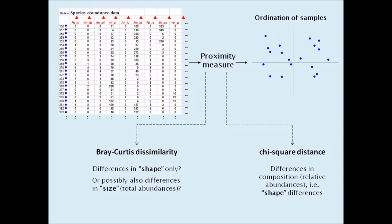A simple example shows that Bray-Curtis can be influenced by total abundances as well as relative ones.